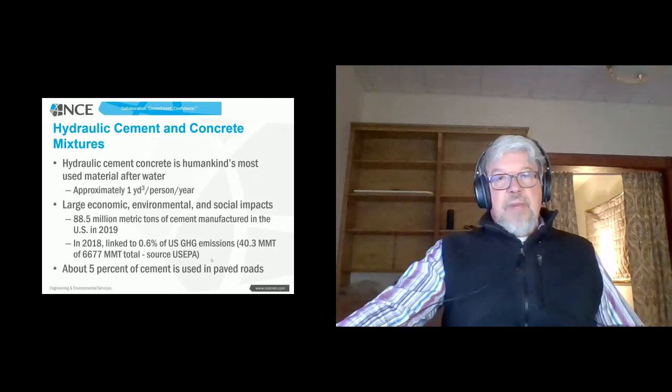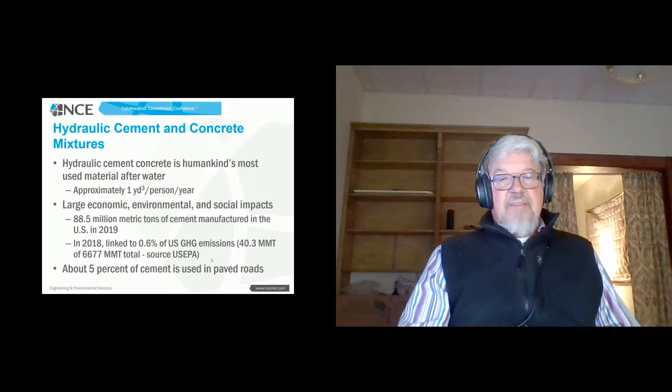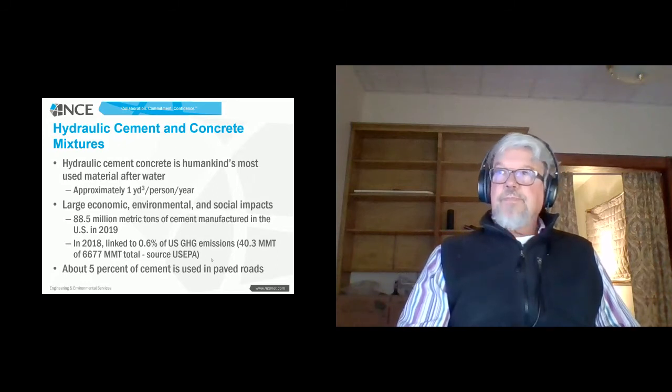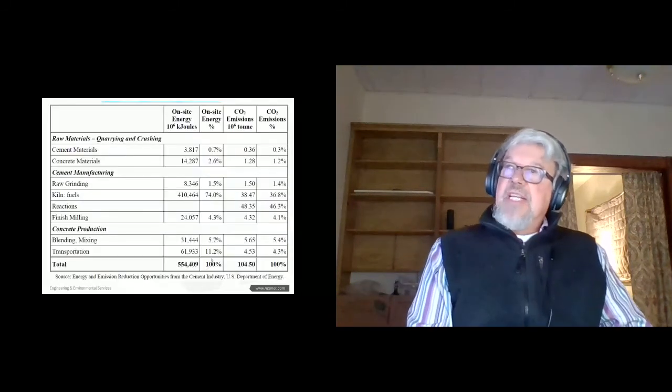The 2018 numbers showed 40.3 million metric tons of greenhouse gas production linked to the cement produced, according to the EPA. And within pavements, paved roads, roughly about 5% of US cement is used. So it's a big impact.